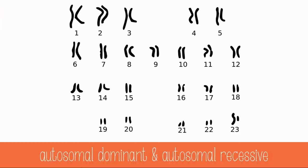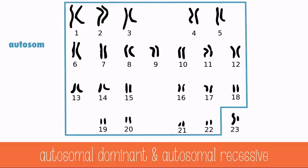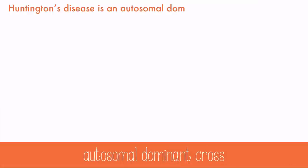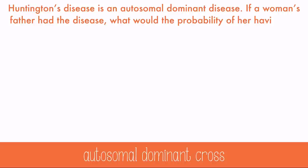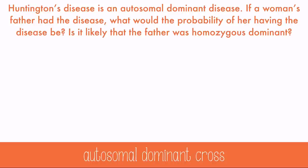Traits can be dominant or recessive, and when we track genetic diseases, most diseases are recessive diseases that occur on the autosomal chromosomes. This means that two recessive alleles would be present in order to have the disease. Autosomal dominant diseases would need only one disease allele for the disease to be present. An example of an autosomal dominant disease is Huntington's disease, which affects the nervous system and shows up later in life.